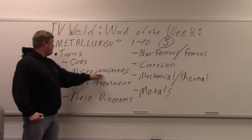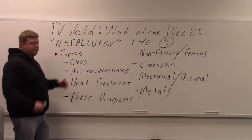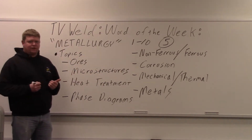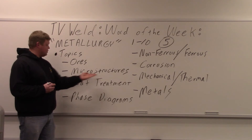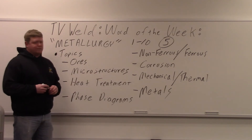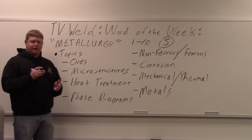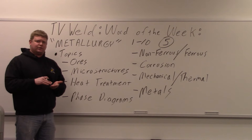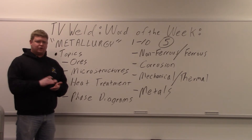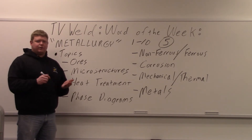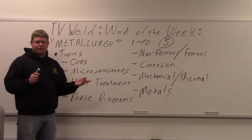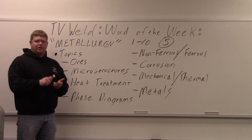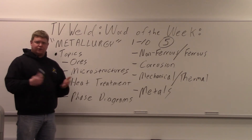Microstructures is probably one of the most common things I think of when I think of metallurgy. You're looking at crystal microstructures of metals — you cut it, polish it, and then look at it under a microscope. There are a bunch of different microstructures; for carbon steels those would be martensite, austenite, ferrite, and pearlite. You can look all those up.